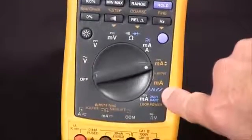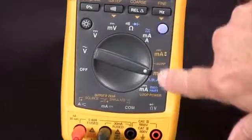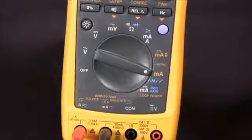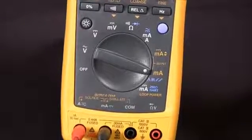With the blue key we can select one of those four, and that's how we source 4 to 20 milliamps DC with our 789 process meter.